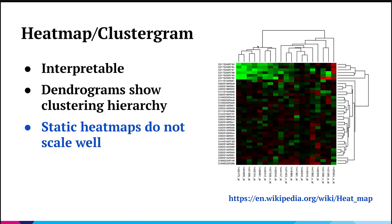We can also visualize the hierarchical clustering using what's called a dendrogram, so you can see the relationship between how similar these dimensions are and how similar those samples are. But the problem you run into here is that these static heatmaps don't scale well in terms of the number of data points, samples, or dimensions. As you keep adding more data, everything becomes so small that it's no longer manageable or readable.